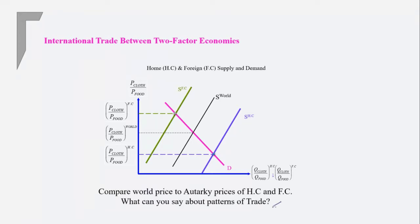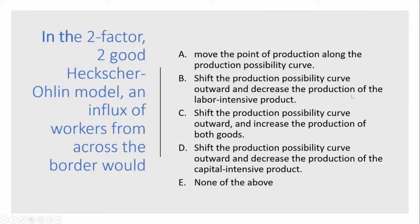What can we say about patterns of trade? The relative price of cloth is much lower in the home country, so the foreign country would want to buy cloth from the home country. The home country will export cloth, the foreign country will export food, and the home country will import food. Since the question does not specify any changes, relative prices are assumed to remain the same — the price line is parallel even after the shift.